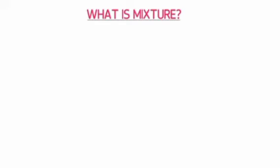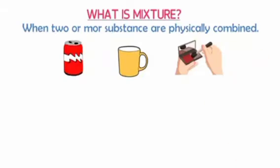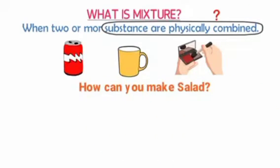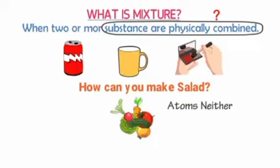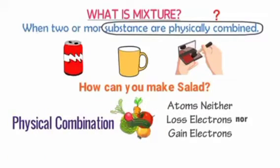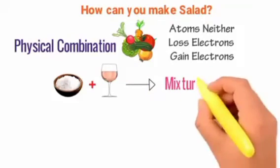What is a mixture? A mixture is when two or more substances are physically combined — like tea with sugar and water. Those substances are physically combined. For example, to make a salad you chop vegetables and mix them. The vegetables do not lose or gain electrons — that is a physical combination.